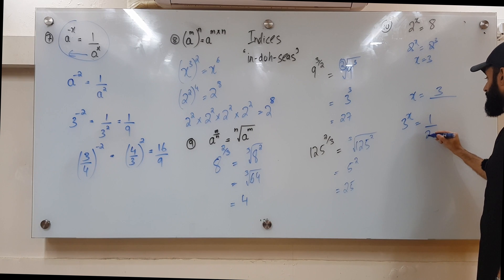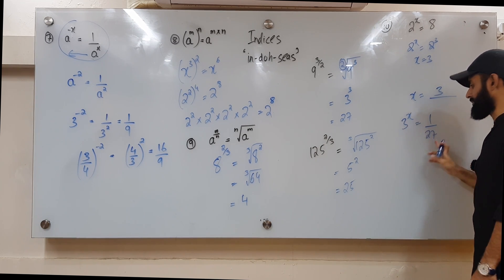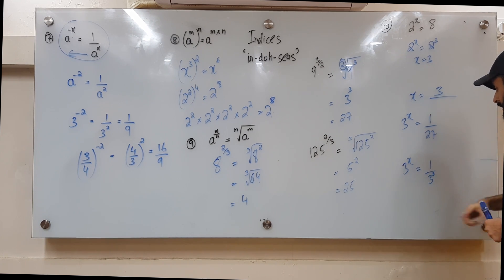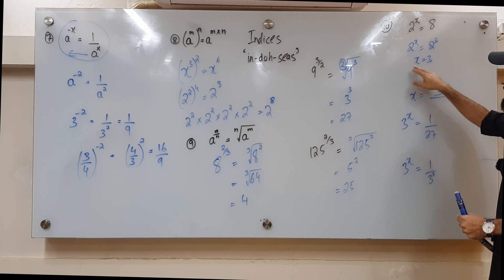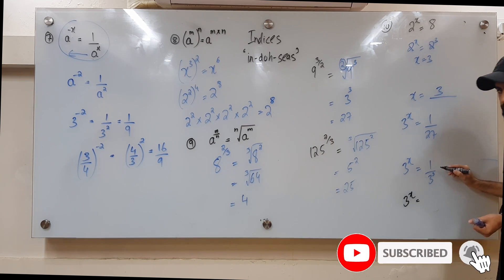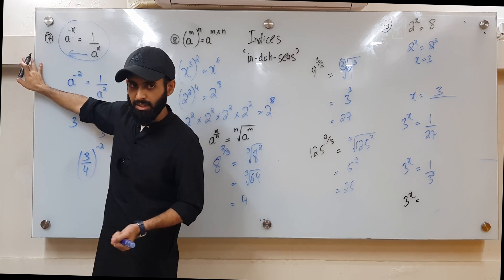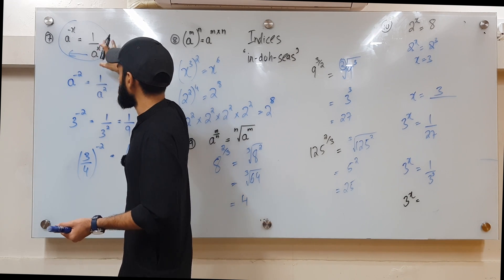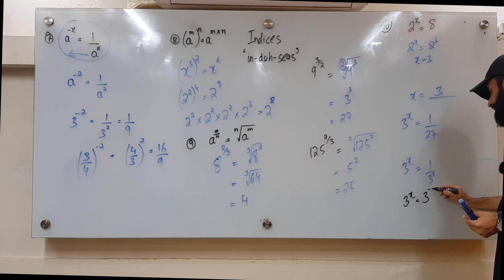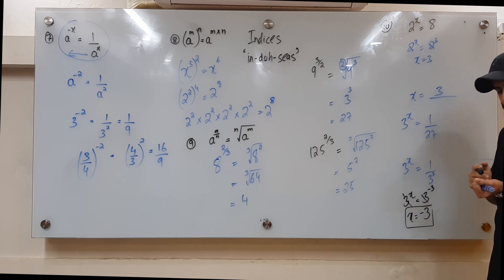Another example: 3 to the power x equals 27. Write 27 as 3 cubed. Now both sides aren't in the same form yet — one is in the numerator and one is in the denominator — so use rule seven in reverse: bringing 3 cubed to the numerator changes the power sign, giving 3 to the power negative 3. Ignoring the bases and comparing powers gives x equals negative 3.